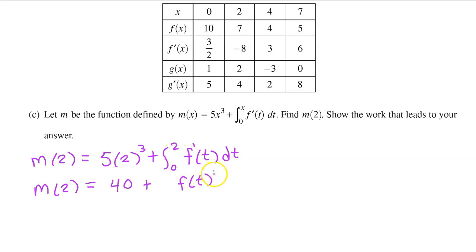But we then apply the limits of integration from 0 to 2. So now we have m at 2 is equal to 40 plus. This means we need to find the value at the upper limit of integration minus the value at the lower limit. So this will be f at 2 minus f at 0.